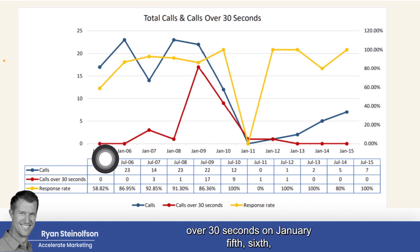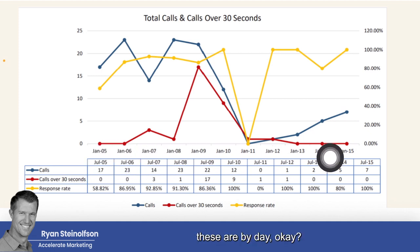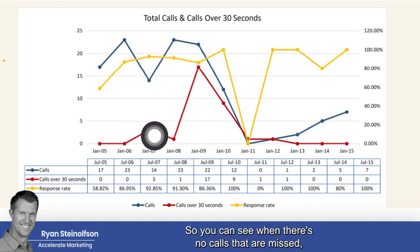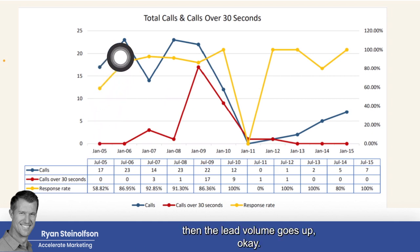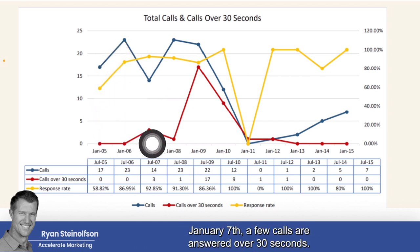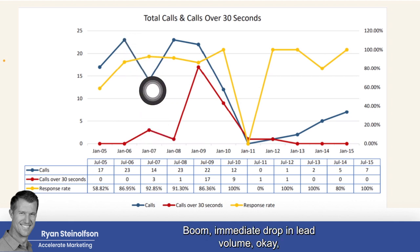You can see when there are no calls that are missed, the lead volume goes up. On January 7th, a few calls are answered over 30 seconds — boom, immediate drop in lead volume. January 8th, it went down, but there's still like one missed call, but Google said, 'okay, you're doing better.'